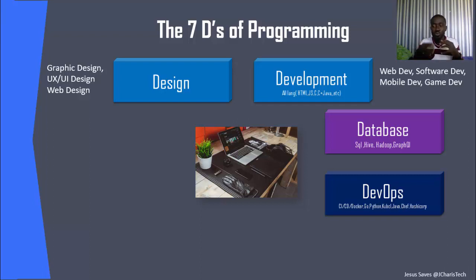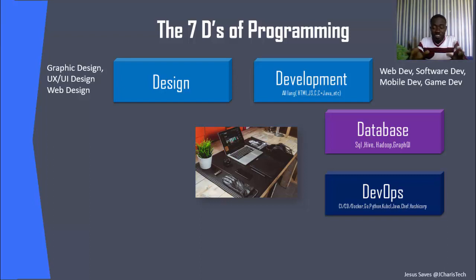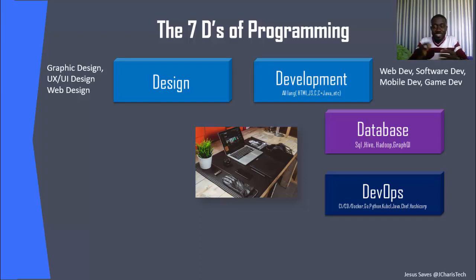You also need to know how to work with Docker containers, Kubernetes, and HashiCorp tools. HashiCorp is a very interesting company that builds a lot of tools for DevOps. DevOps also pays very well. We now have cloud DevOps, edge DevOps, and several other forms, making it the fourth D of programming.